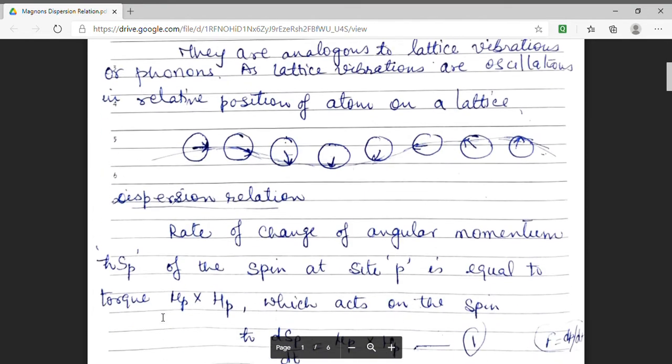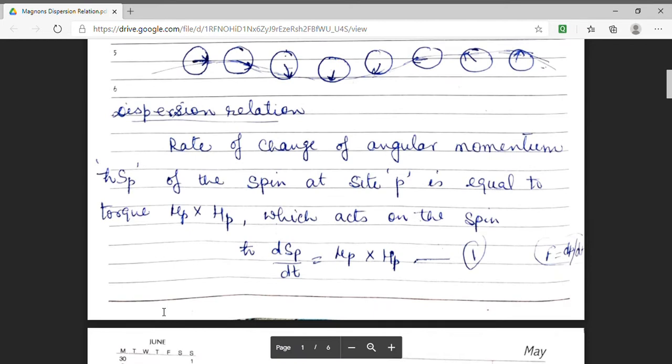Now, we will derive the dispersion relation for these magnons. In order to derive the dispersion relation, I am taking the rate of change of angular momentum. This is in accordance with the Newton's second law of motion which states that f equal to dp by dt. That means, force is equal to rate of change of linear momentum.